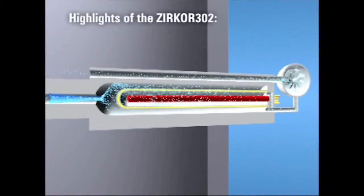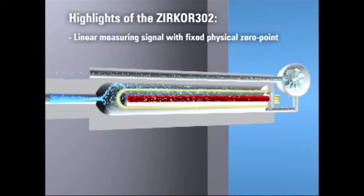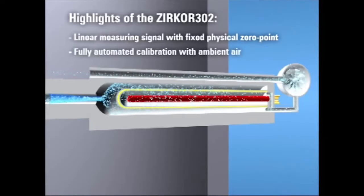The highlights of the Circor 302 are: linear measuring signal with fixed physical zero point and fully automated calibration with ambient air.